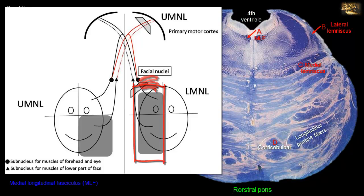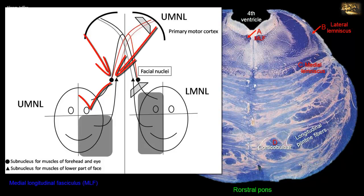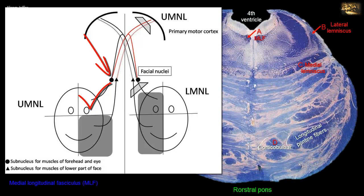In lower motor neuron lesion affecting either the facial motor nucleus or the facial nerve itself, all muscles of facial expression ipsilateral to the lesion are affected. In upper motor neuron lesion, the upper facial muscles are spared because the part of the facial nucleus supplying upper facial muscles receives bilateral projections from the cerebral cortex. So if one side is affected, it continues to receive projections from the other side.